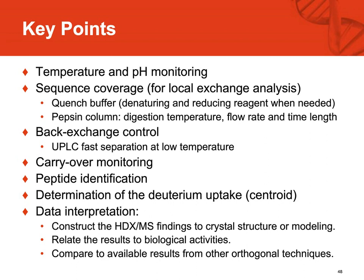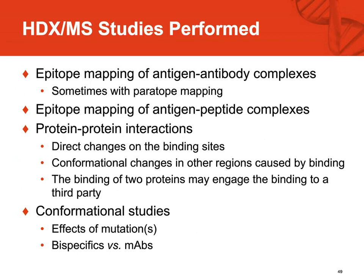Studies performed include epitope mapping when binding to monoclonal antibodies, sometimes with peritope mapping, epitope mapping when binding to peptides, and protein-protein interactions. The change of deuterium uptake profile could be directly on the binding sites or reflect long-range allosteric conformational changes as a result of binding. Also, the binding of two proteins may engage binding to a third party. For conformational studies, we have evaluated the effects of mutations on protein structures and compared bispecifics versus mAbs.